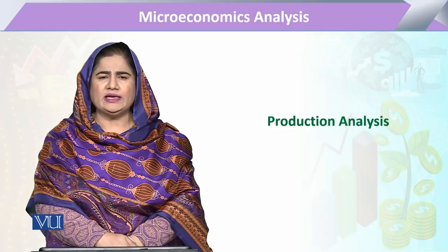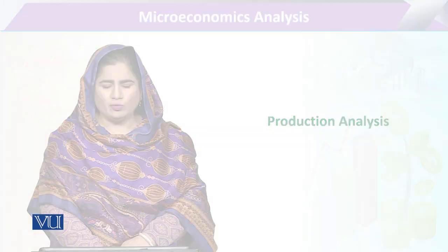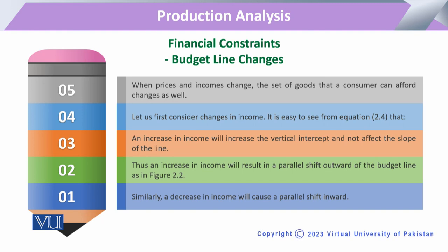Module 139 in production analysis, we are going to study budget line changes. As we know, the budget is the maximum capacity available to the producer for the purchase of various factors of production. Now we have to check what are the possibilities that this budget or the available resource allocation maximum capacity to the producer is going to change.